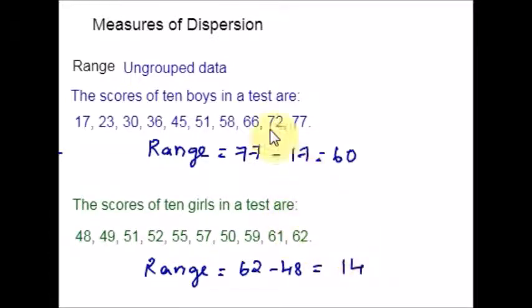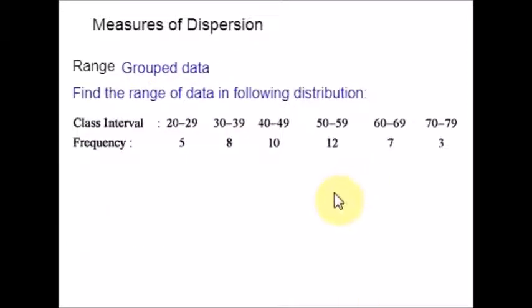This is an example for ungrouped data. Now, let us see an example for grouped data. Here is an example: find the range of data for the following distribution. Do you understand the difference between ungrouped data and grouped data? For ungrouped data, the data would be very raw with no arrangement. For grouped data, it would be grouped under something. Here, it is grouped under class interval and frequency.